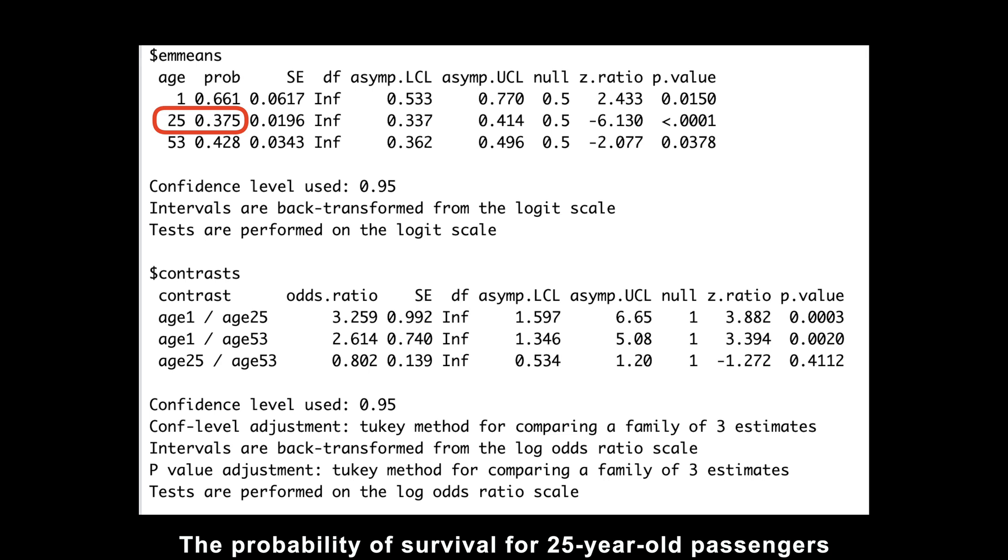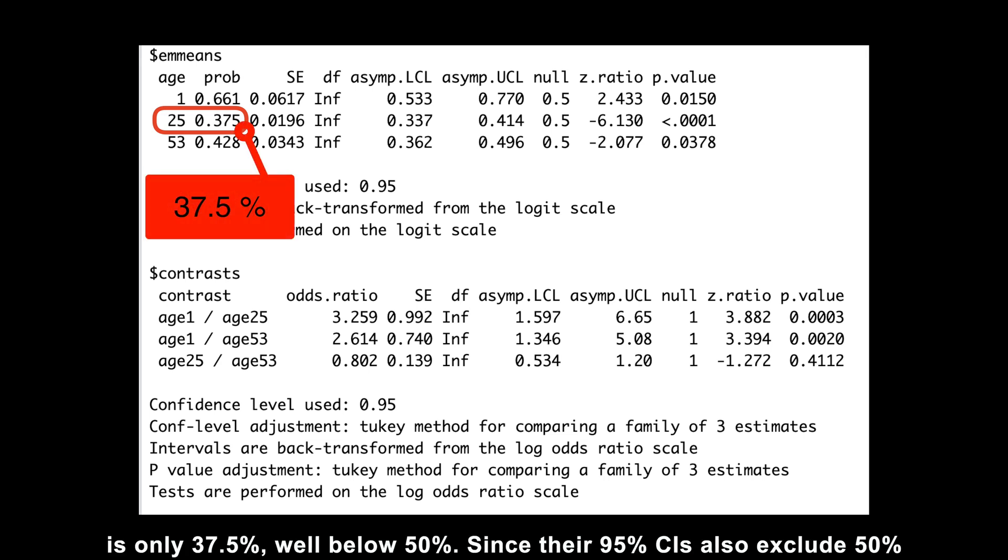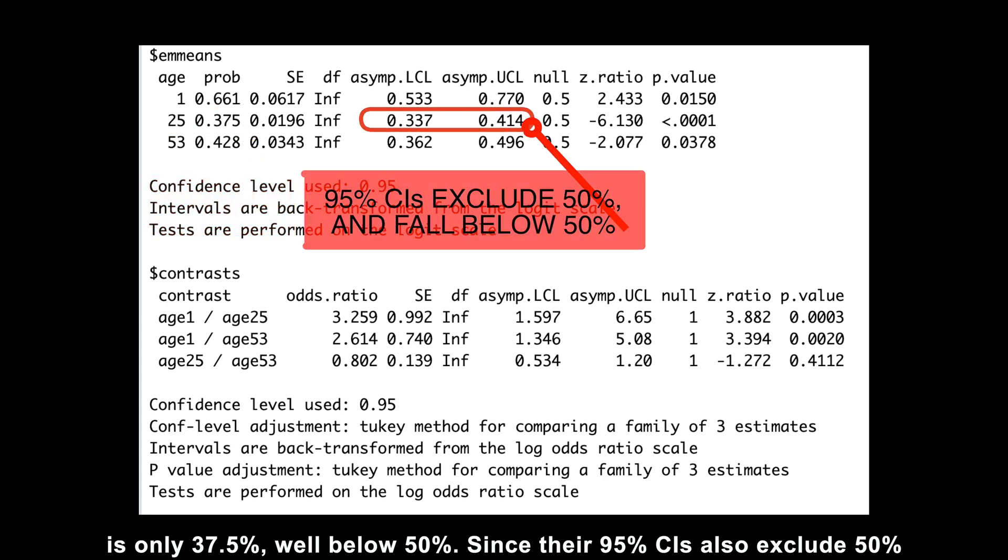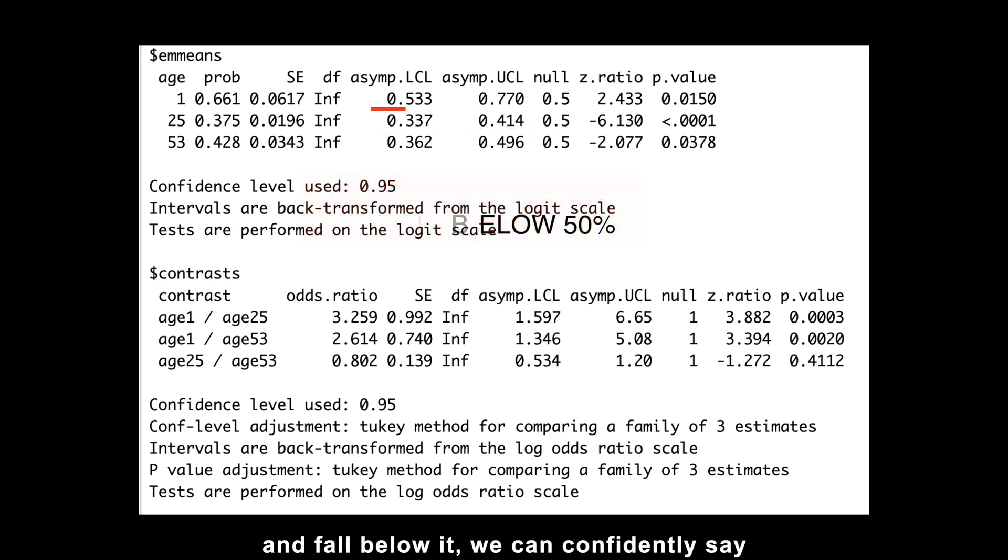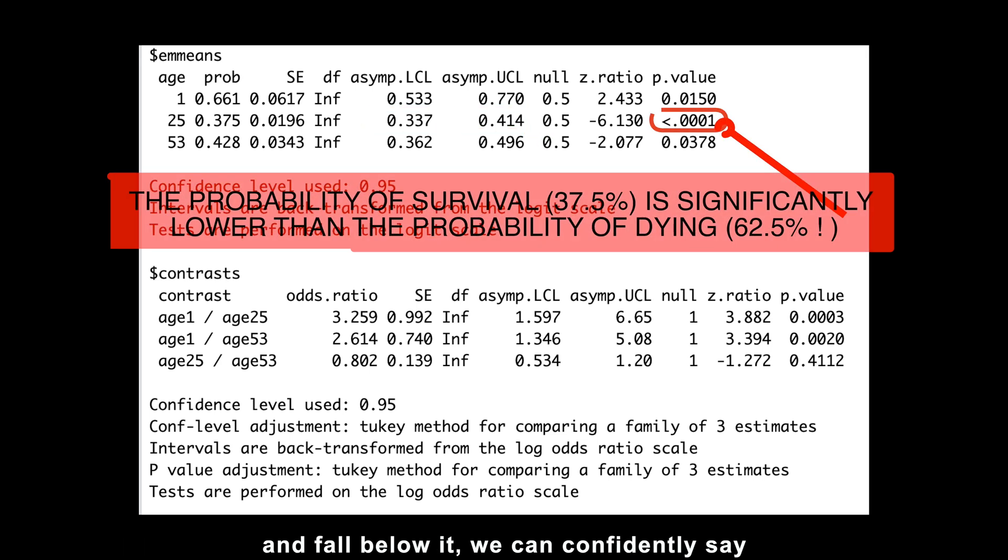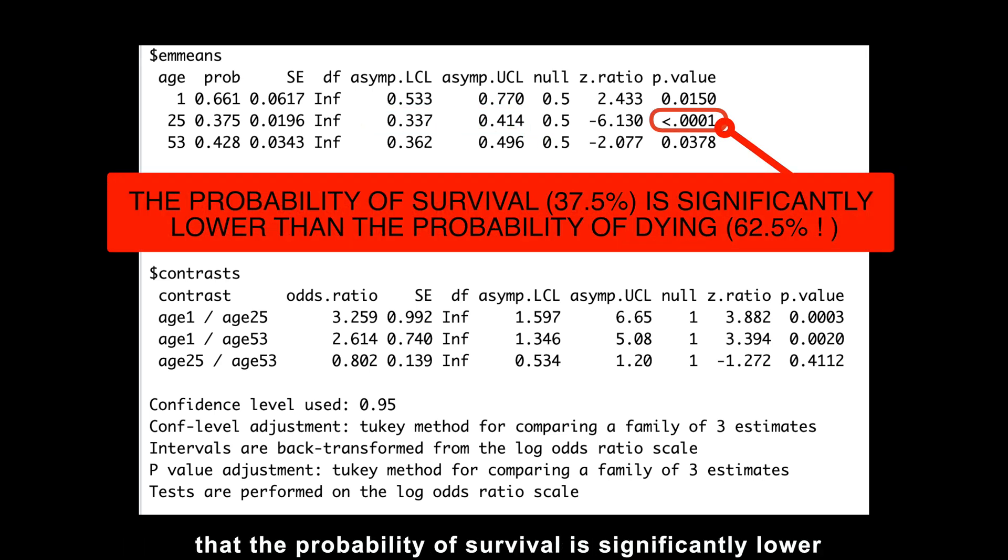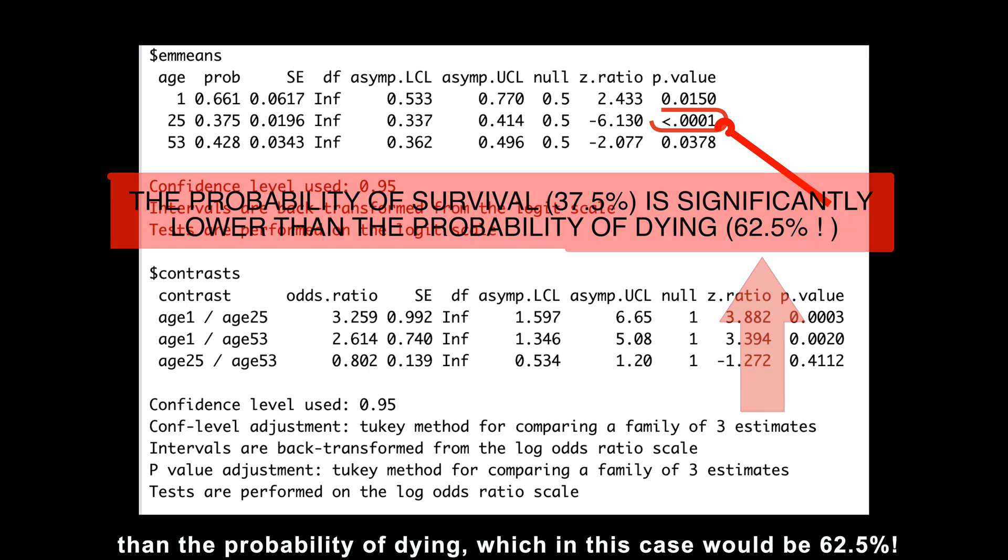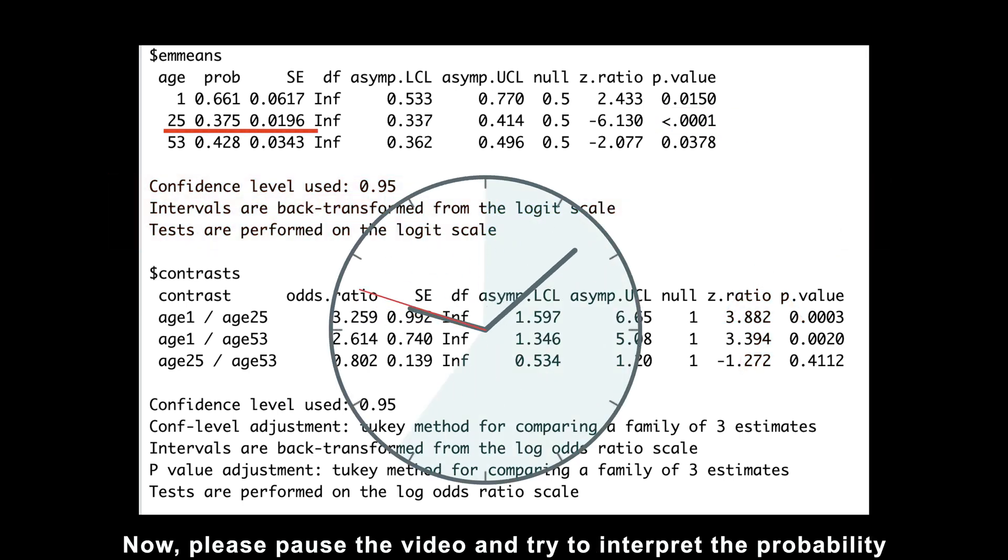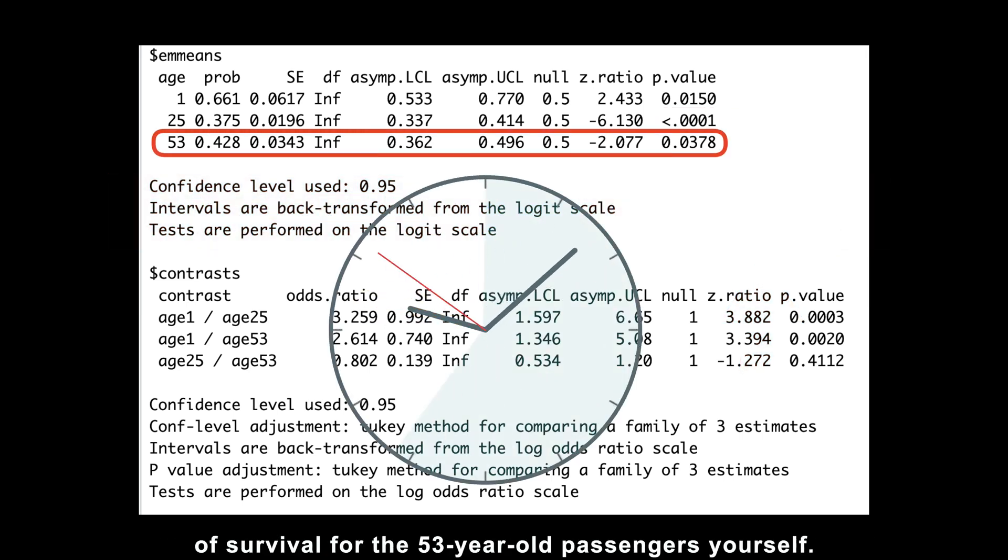The probability of survival for 25-year-old passengers is only 37.5%, well below 50%. Since their 95% confidence intervals also exclude 50% and fall below it, we can confidently say that the probability of survival is significantly lower than the probability of dying, which in this case would be 62.5%. Now, please pause the video and try to interpret the probability of survival for the 53-year-old passengers yourself.